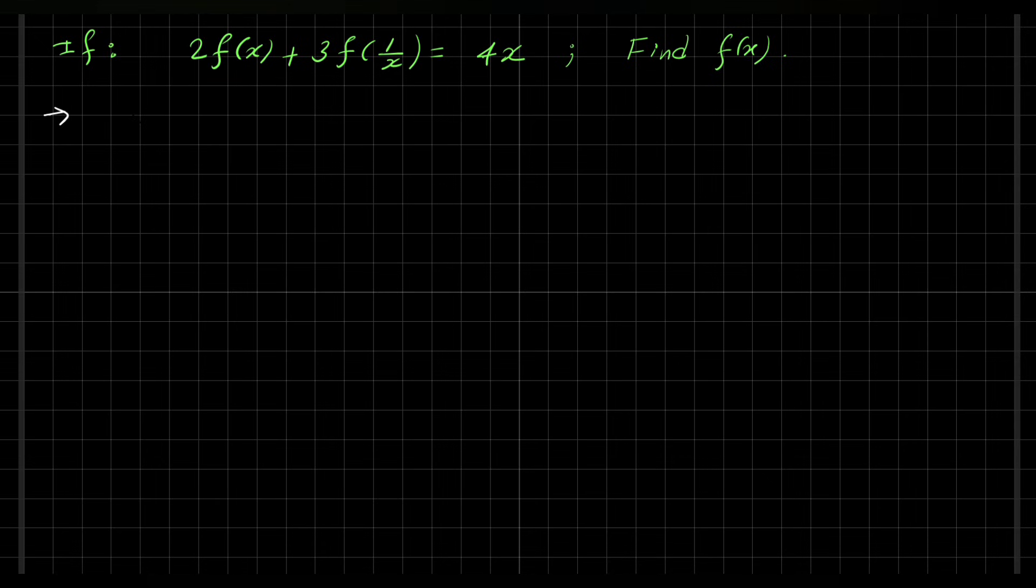So first we have 2f(x) + 3f(1/x) = 4x. Look here, the variables are x and 1/x.